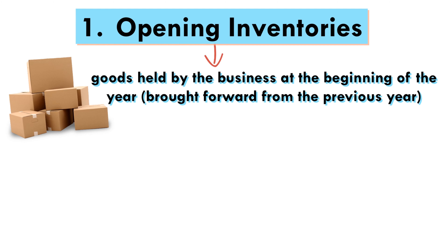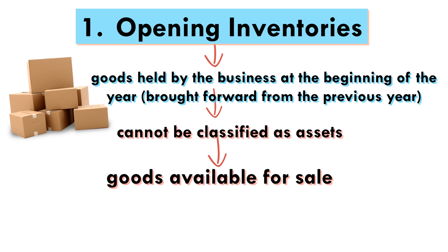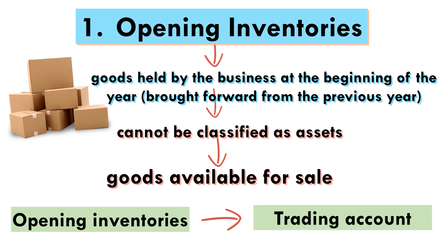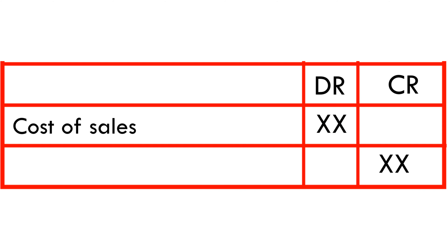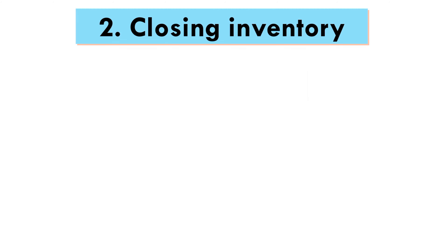Please take note of this. Opening inventory: these are goods held by the business at the start of the year, meaning they are brought forward from the previous year. Such goods will normally be sold during the year, and that means they cannot be classified as assets but will form part of the goods available for sale. This means that opening inventories are transferred to the trading account. The double entry, therefore, becomes debit cost of sales — which is an item of the statement of profit or loss — and credit inventory assets — which is an item of the statement of financial position.